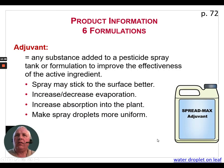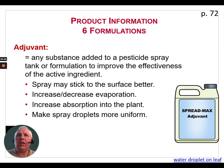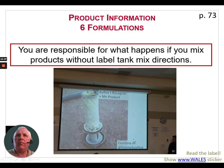An adjuvant is any substance added to a pesticide spray tank or formulation to improve the effectiveness of the active ingredient. It may cause the spray to stick to the surface better, increase or decrease evaporation, increase absorption into the plant, or make spray droplets more uniform. You are responsible for what happens if you mix products without a label tank-mix recommendation.